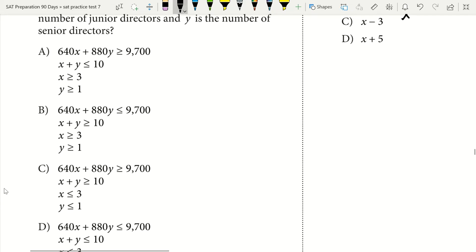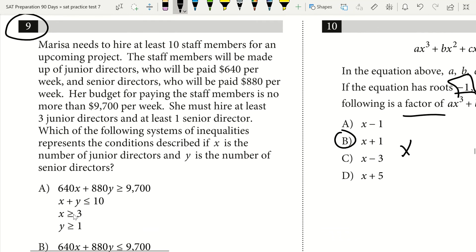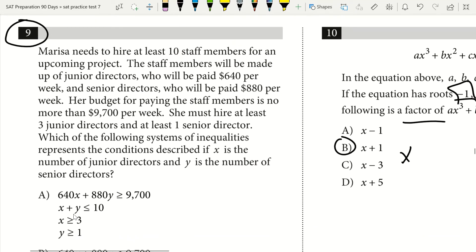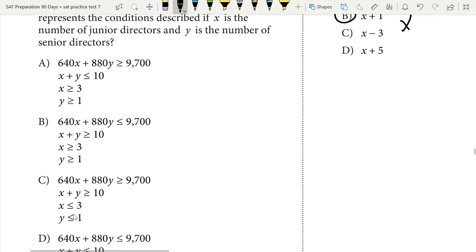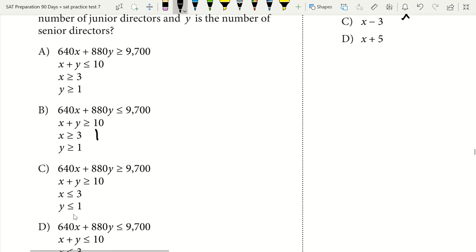This is going to be the non-slowdown version. I see question 9 and this is how I'd approach it if I were taking the SAT myself. Marissa needs to hire at least 10 staff members. I go down and see which ones have greater than 10. My only options are B and C, so I get rid of D and A.